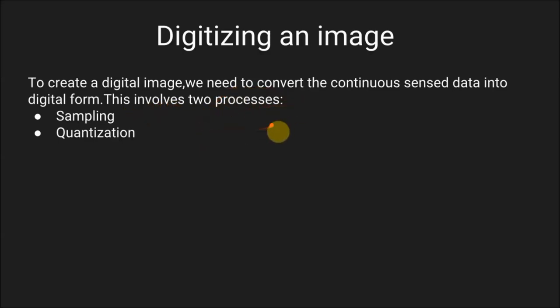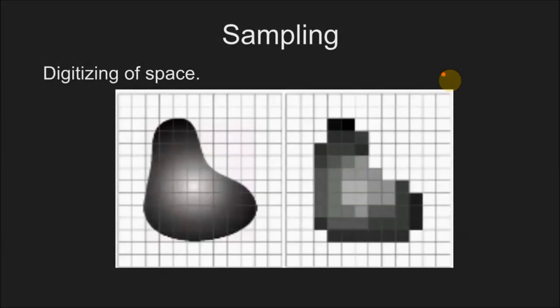What is sampling? Sampling basically means digitizing of space. If we consider this picture, then this would be the corresponding digitized image. If we further divide this picture in the form of pixels and consider any particular pixel, this is consisting of this line.